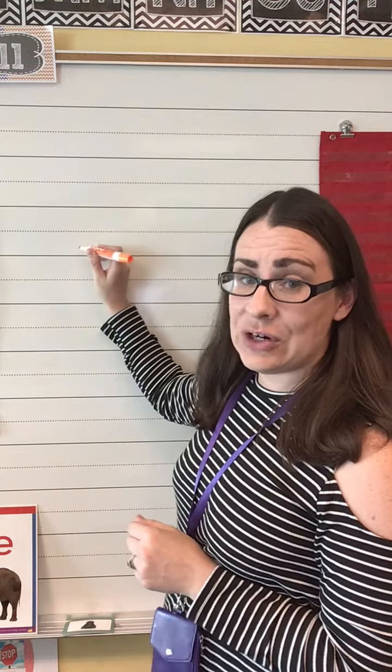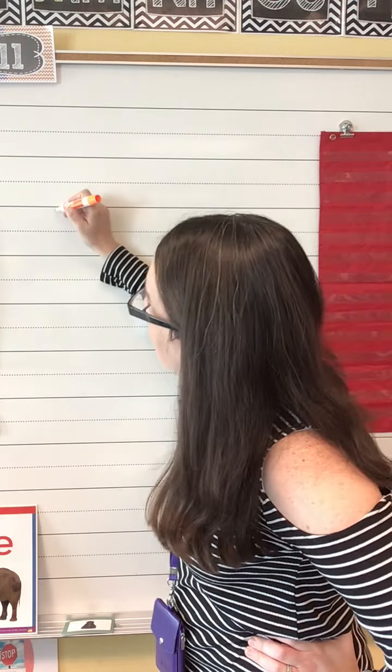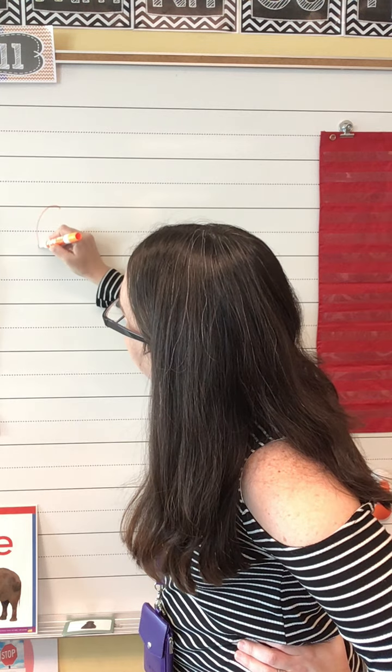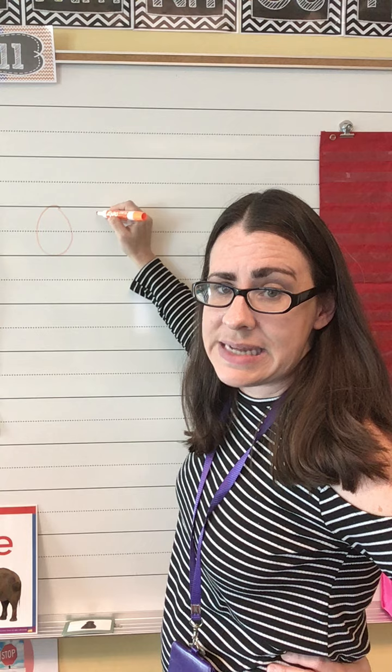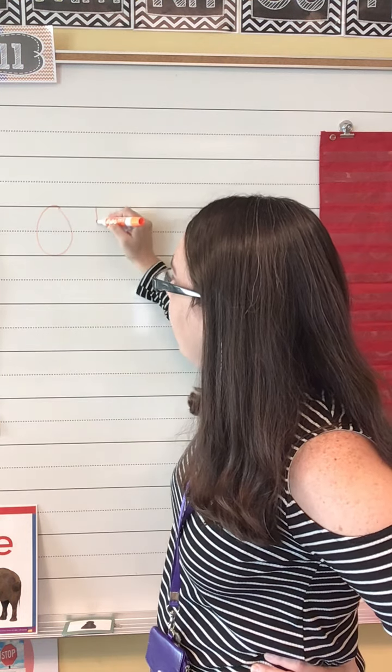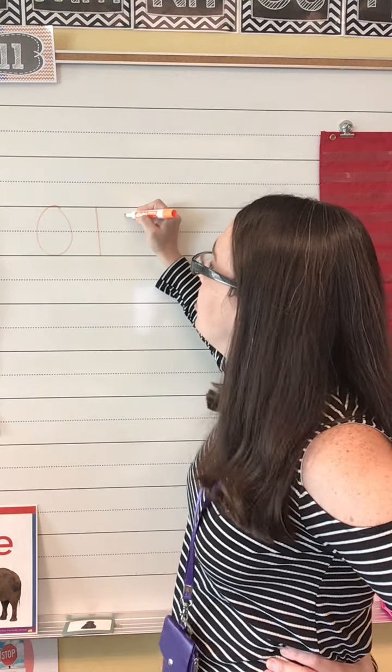Are you ready? What is the first number we need to write in order? Zero. So we have zero. What comes next? One. Two.